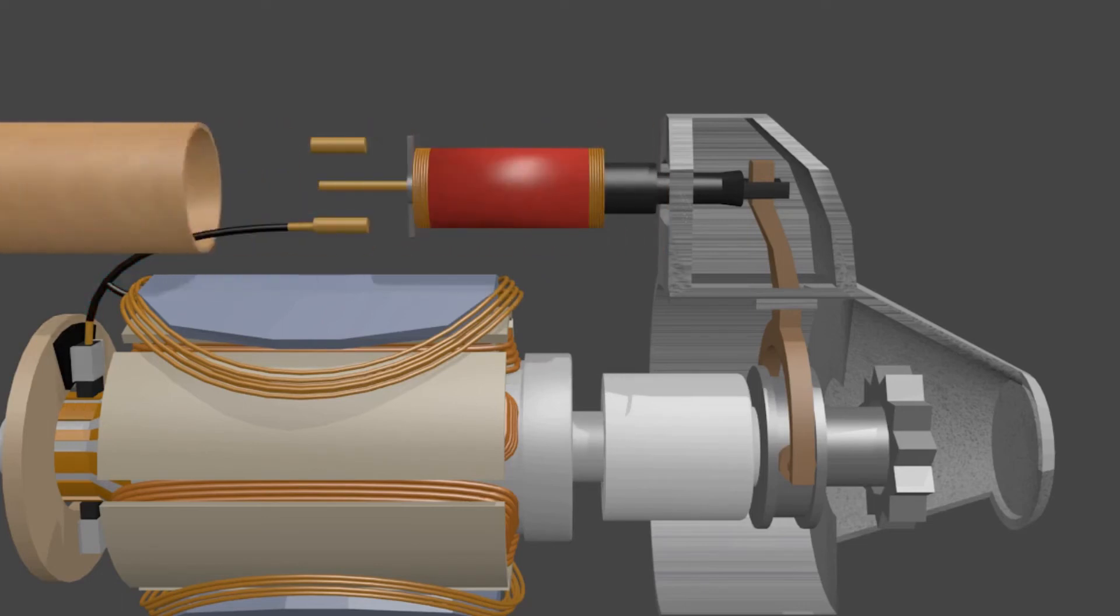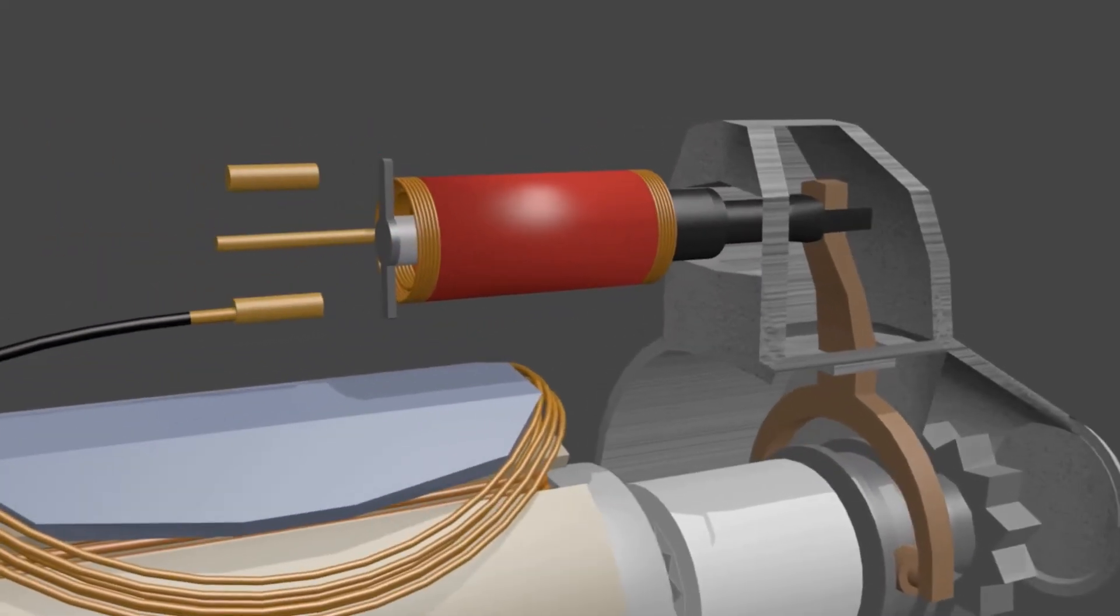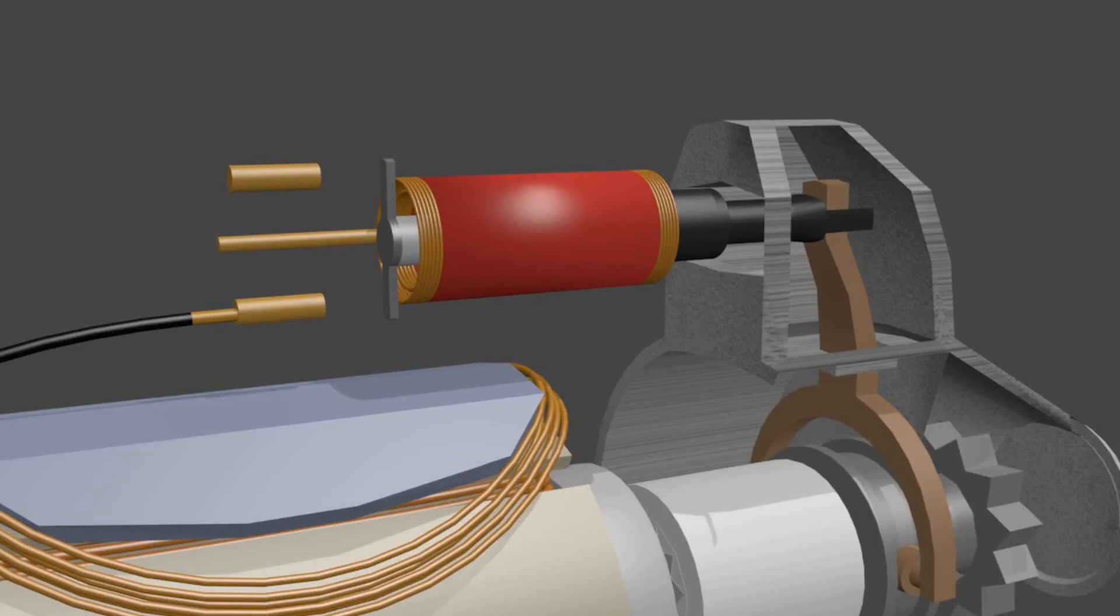Solenoid also uses magnetic fields. But in the solenoid, the coil is not attached to the iron core. So that the iron core can move freely. In this position, when the coil is electrified, a magnetic field is formed. This magnetic field makes the iron core in the middle of the coil move according to the direction of the magnetic field.